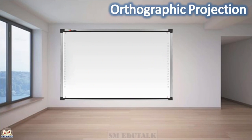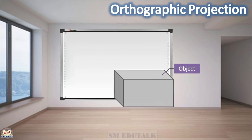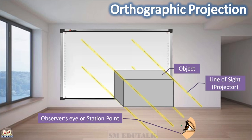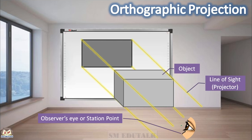This video is a sequel of Theory of Projections. If you have not watched the first part, watch it and come back to this video for better understanding. A small recall: the given 3D object is viewed by the observer, whose eye is named as Station Point. There are some parallel lines of sight or projectors which connect the observer's eye and the object. They trace the object and project it as an image onto a flat surface. This image is the required two-dimensional view, and the flat surface is the plane of projection.